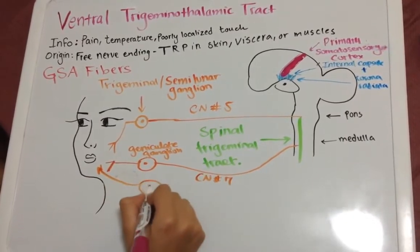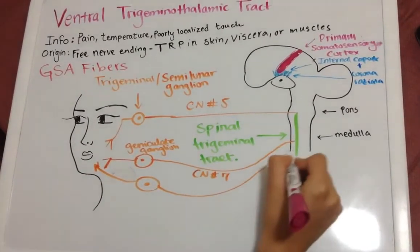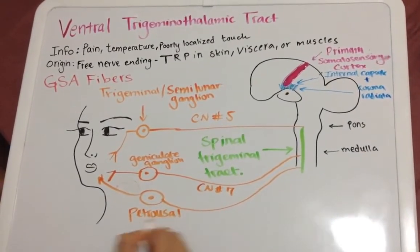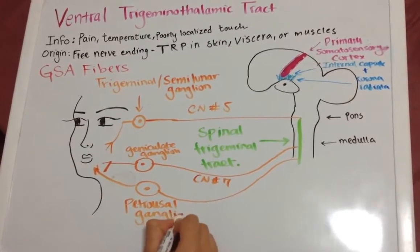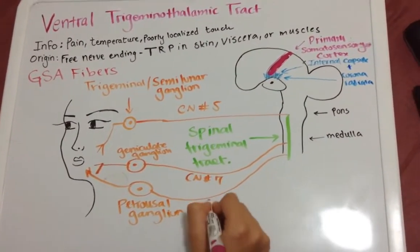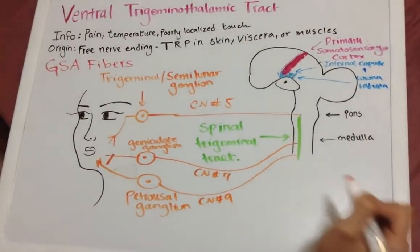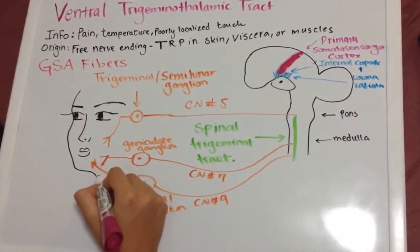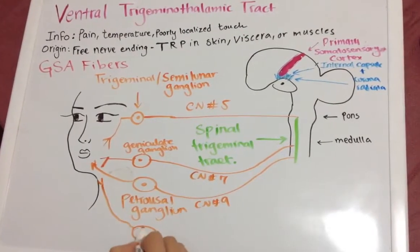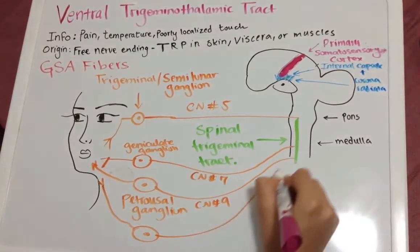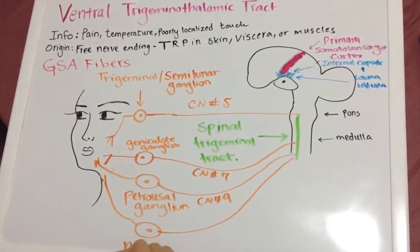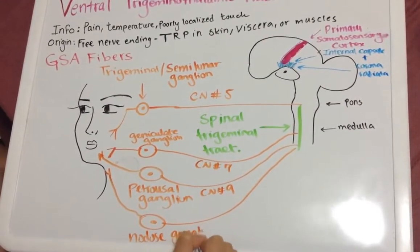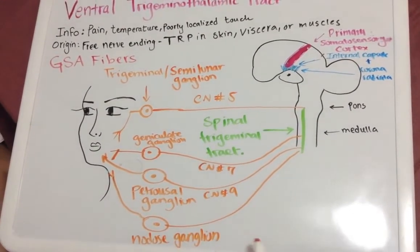You will also have cranial nerve nine. This would be the petrosal ganglion — this is where the cell bodies for cranial nerve nine are located, and this will also join the spinal trigeminal tract. And you will also have cranial nerve ten — this could be the nodose ganglion, or superior ganglion, as different references say different things.